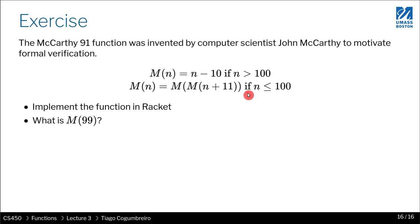Otherwise, if n is smaller or equal than 100, then you would return calling M, where the argument is calling M, where the argument is n plus 11. So try to implement this function in Racket. And let me know, maybe in the Discord channel, what is the result of calling M of 99.